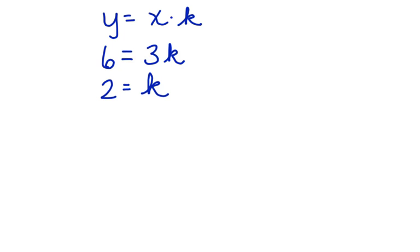How can we show this on a graph? Let's look at the first example once again. Here we have y equals x times k, y was 6, x was 3, and we ended up with a constant of 2.